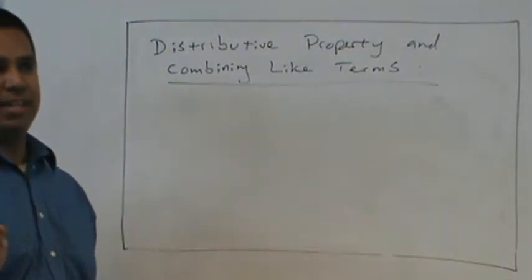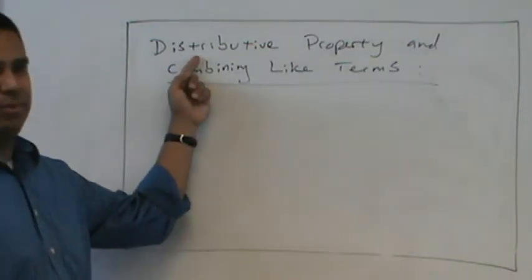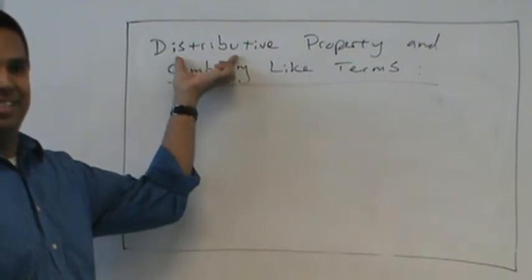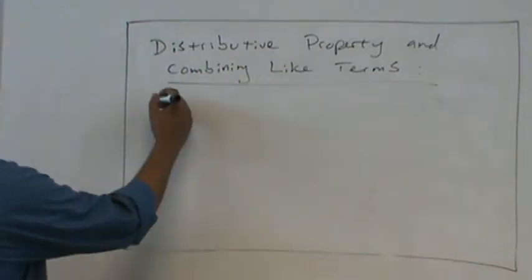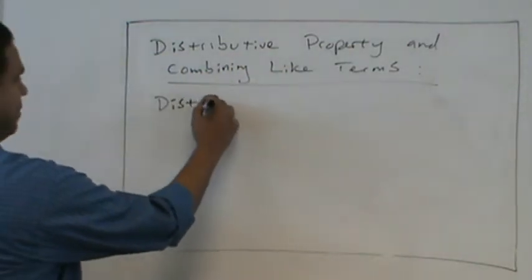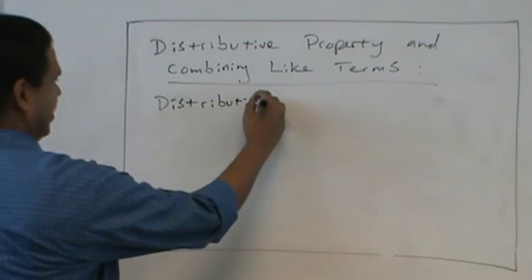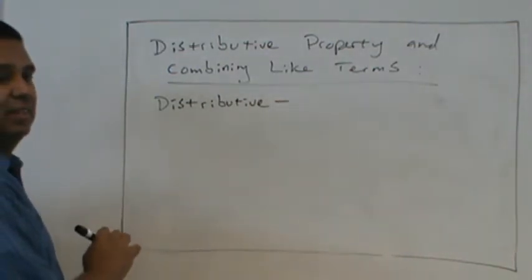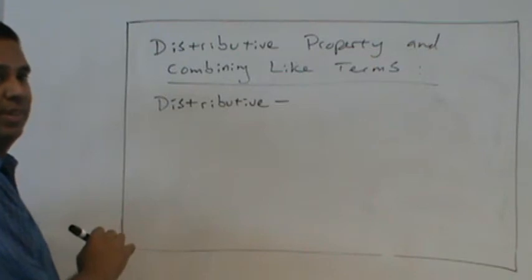So the distributive property, again, that is a crazy weird word. Distributive. Try saying that. Distributive. Very good. So we're going to look at the root word. What does this mean? Distributive root word, base word. Distributive means to? Distribute. Distribute. Very good.